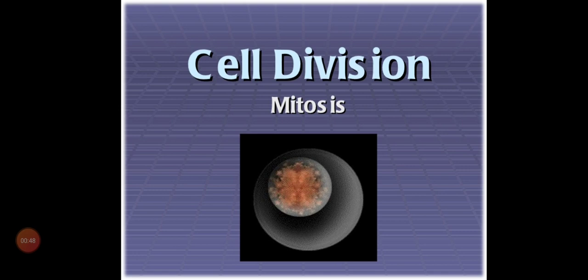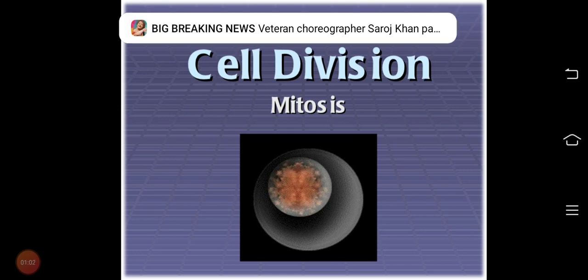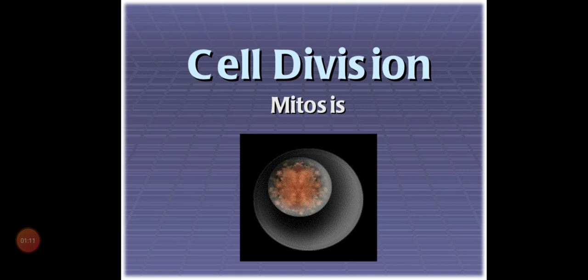Cell is going to divide into two. Why should a cell undergo division? Because only when the cell divides will growth of the organism occur. Under cell division we have three types: amitosis, mitosis, and meiosis. Cell division — how many types? Three types: amitosis, mitosis, and meiosis.